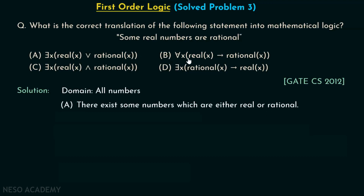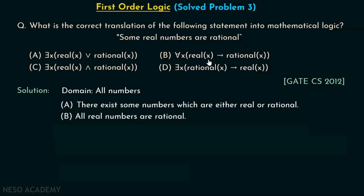Let's discuss option B: for all x, Real(x) implies Rational(x). This can be written as: all real numbers are rational, which is not true. Here, you are saying that for all numbers, if it is real then it is rational — that is not correct. So option B is also incorrect.